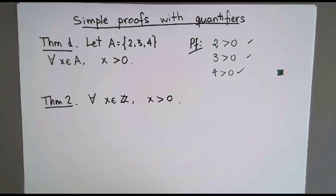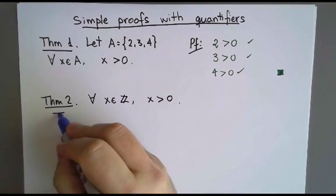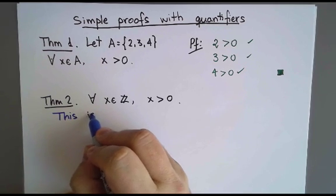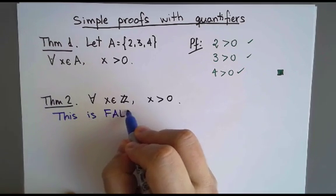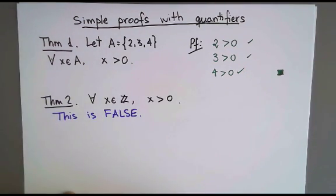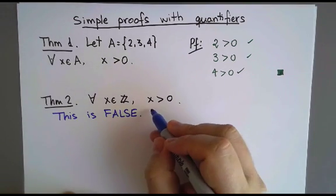And, well, we can't really prove this because this is false. This is not true. Not every integer is positive. Okay. So, since this is false, instead of seeing how we would prove it, we can't, let's see how we prove it is false. So to show it is false, I will need to prove the opposite.